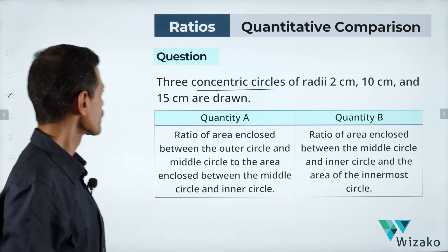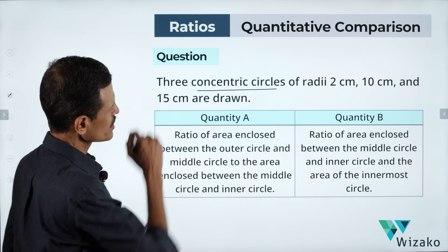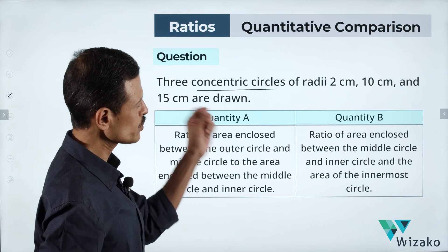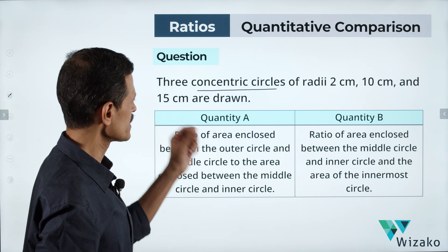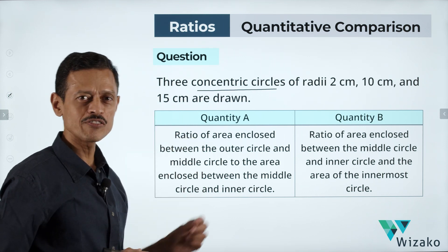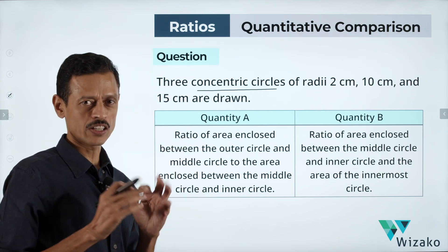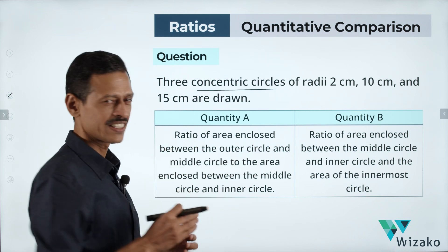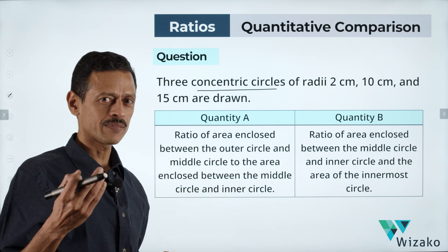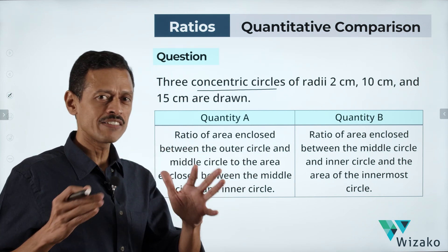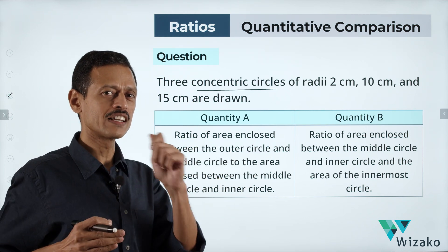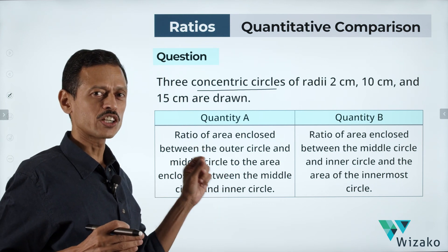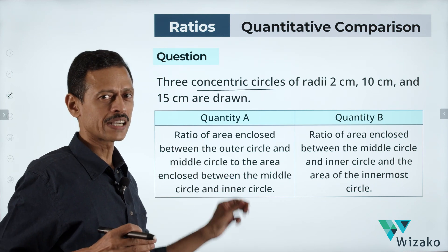Let's get started with the question. Three concentric circles of radii 2 centimeters, 10 centimeters, and 15 centimeters are drawn. There are two quantities — let's quickly read what those quantities are, then spend a little more time understanding what needs to be computed.